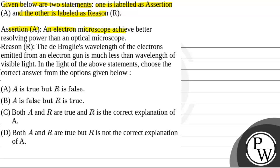Assertion: An electron microscope achieves better resolving power than an optical microscope. Reason: The de Broglie wavelength of the electrons emitted from an electron gun is much less than wavelength of visible light. In the light of the above statements, choose the correct answer from the options given below.